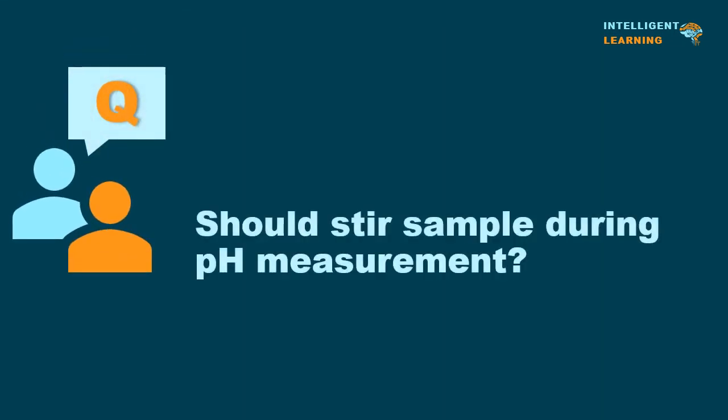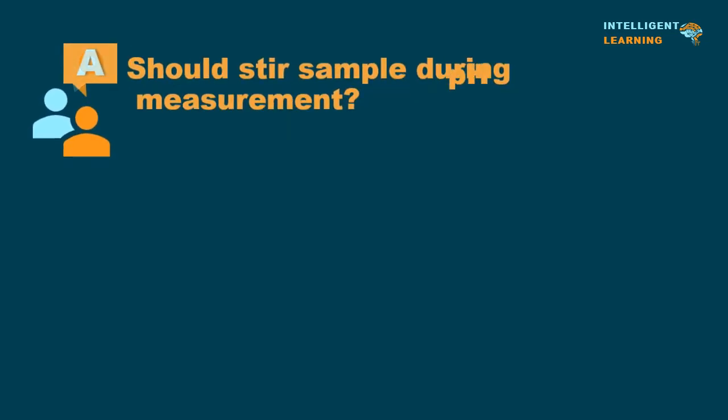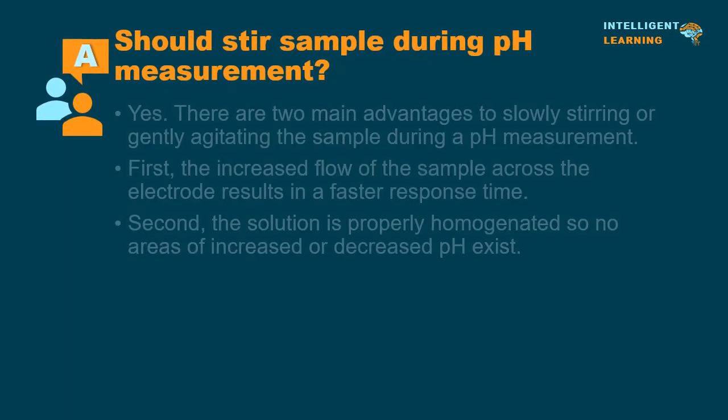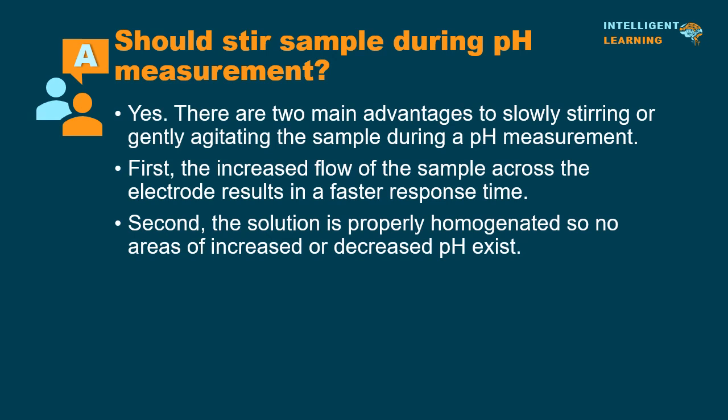Should you stir the sample during pH measurement? Yes. There are two main advantages to slowly stirring or gently agitating the sample during a pH measurement. First, the increased flow of the sample across the electrode results in a faster response time. Second, the solution is properly homogenized so no areas of increased or decreased pH exist.